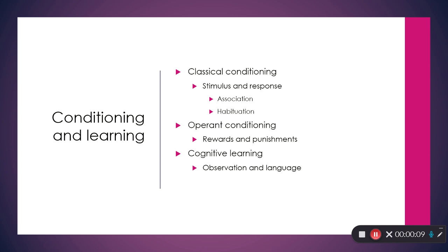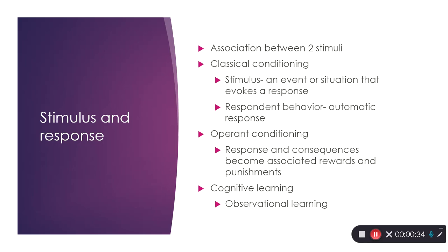We're going to cover three major ones. We're going to talk about classical conditioning, operant conditioning, and cognitive learning theory. For classical conditioning, the key words are stimulus and response. For operant conditioning, we're going to be talking about rewards and punishments. And for cognitive learning: observation, modeling, imitation, and language.